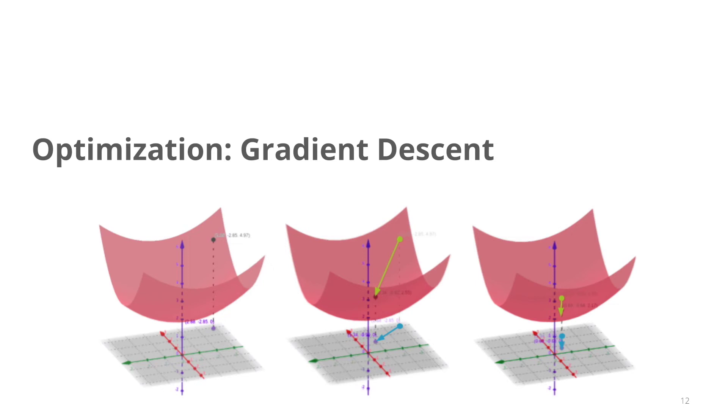So the way that we would optimize this loss function and minimize it is that first of all, we would have some initial value, and you can see that up here in the slide. So this is where we start, this is our initial loss. Then we calculate the gradient of this loss value, and we take a step in the negative gradient direction in order to minimize the loss.